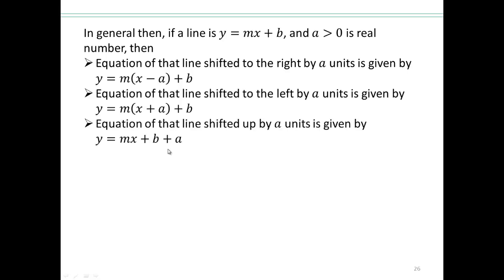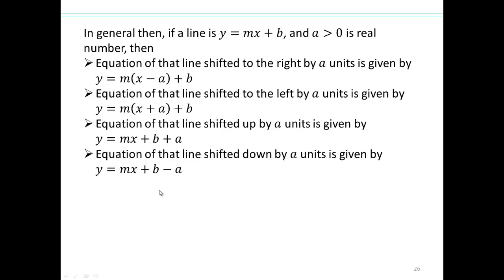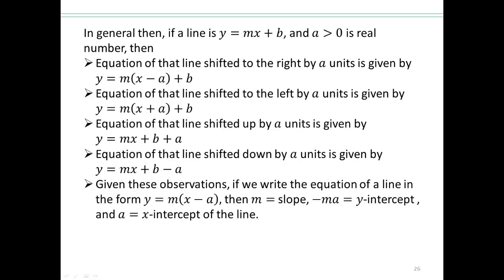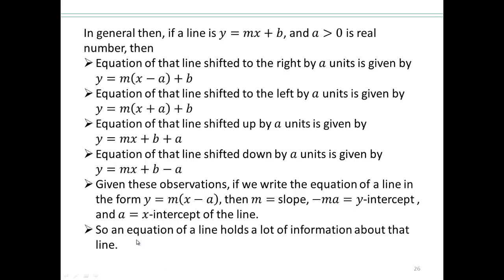The equation of a line shifted by a units: adding a on the outside moves it up, and subtracting a moves it down. Given these observations, if you write y equals m times x minus a, m is the slope, and negative m times a represents the y-intercept because you replace x with 0. The equation of a line holds a lot of information: x-intercept, y-intercept, slope, shifting left or right, shifting up or down — lots of information.